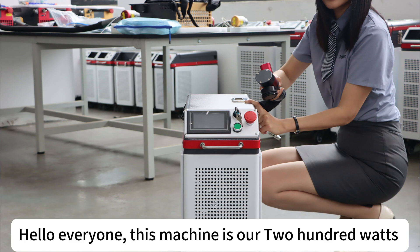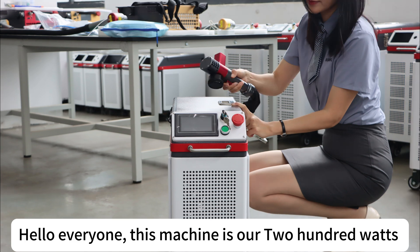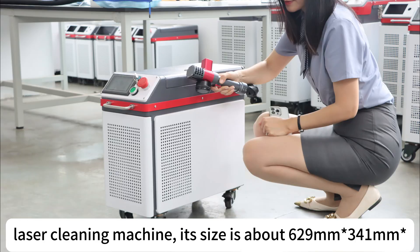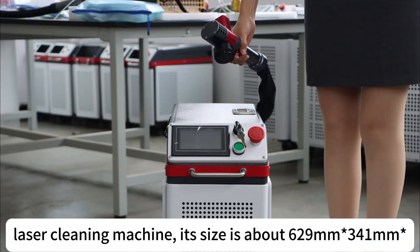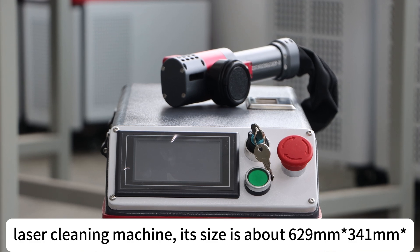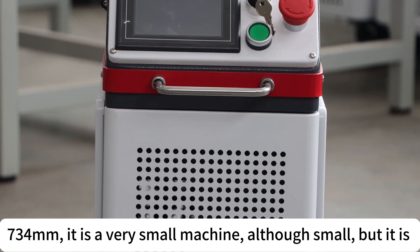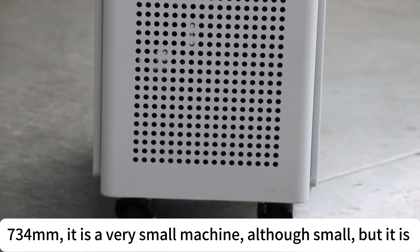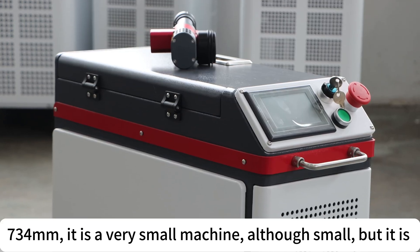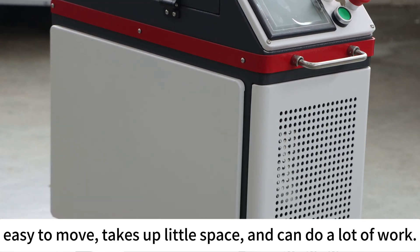Hello everyone, this machine is our 200 watt laser cleaning machine. Its size is about 629 millimeters by 341 millimeters by 734 millimeters. It is a very small machine, although small, it is easy to move, takes up little space, and can do a lot of work.